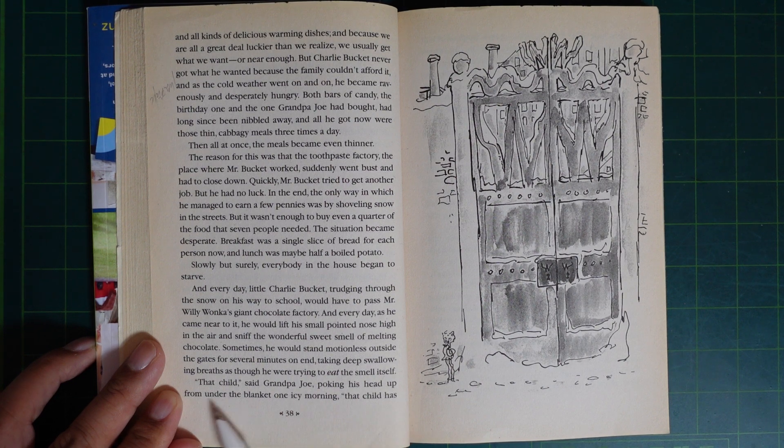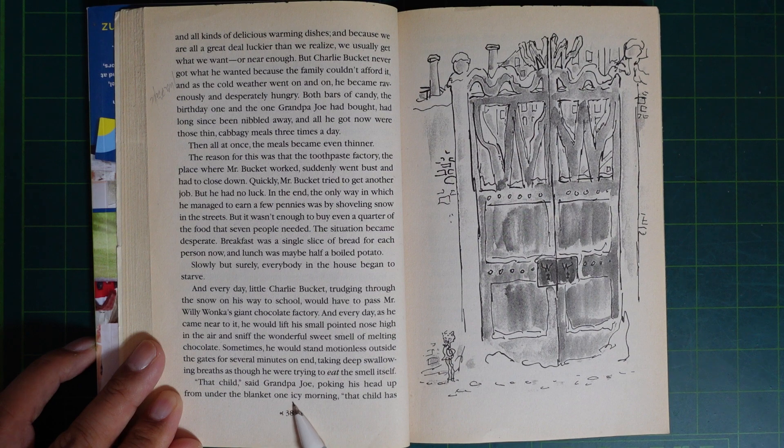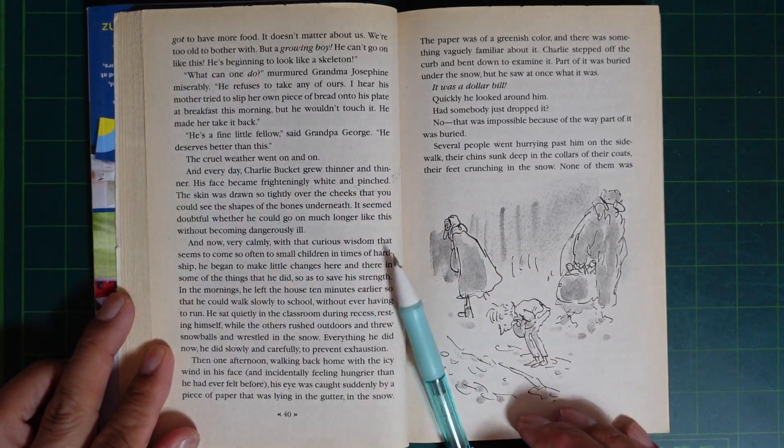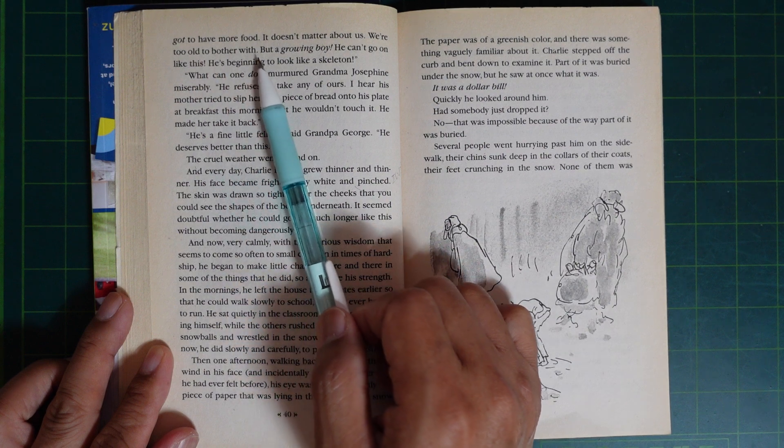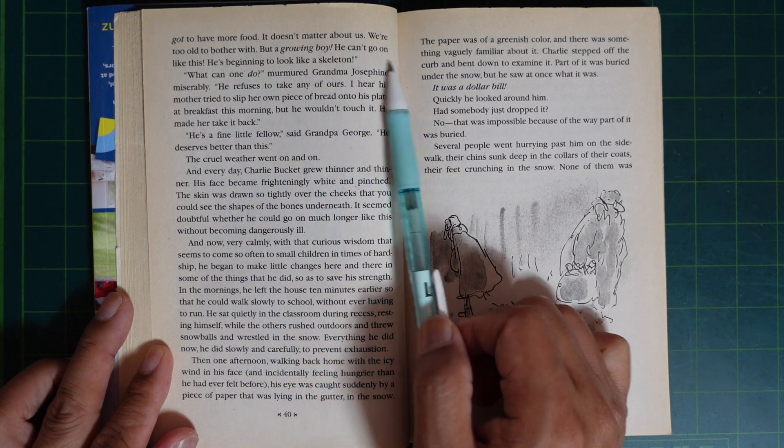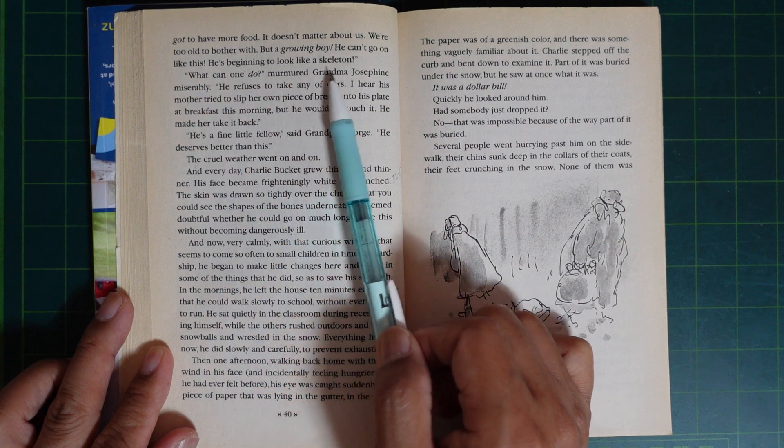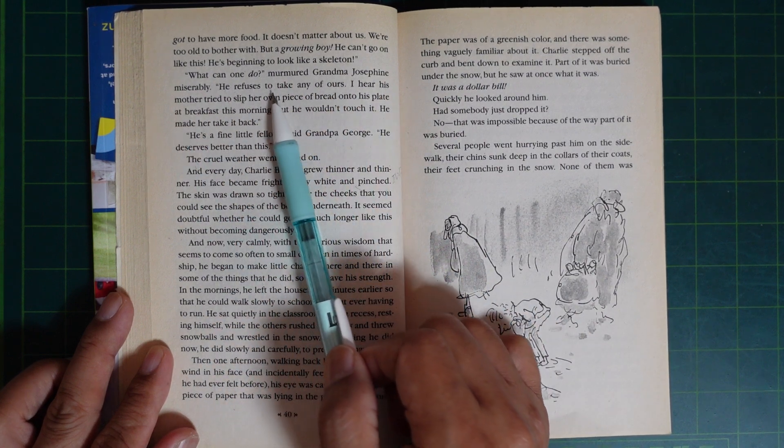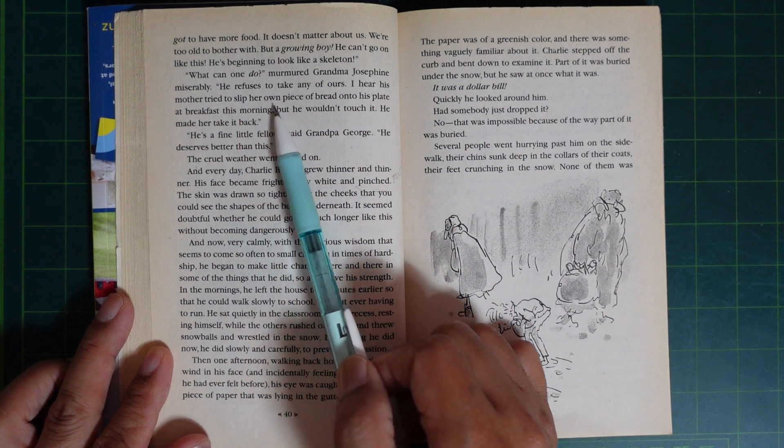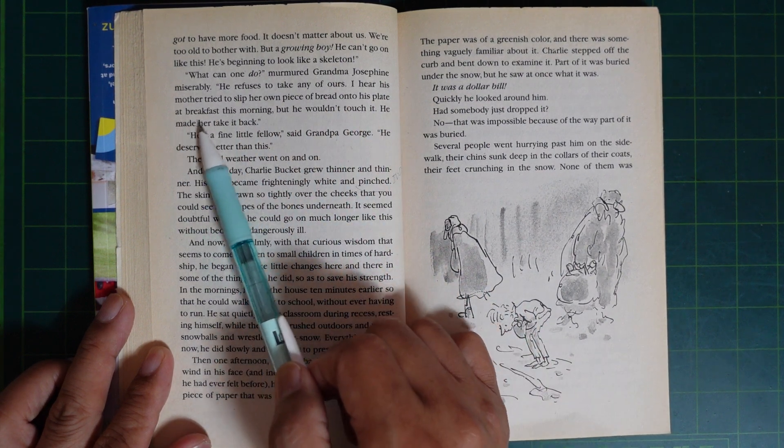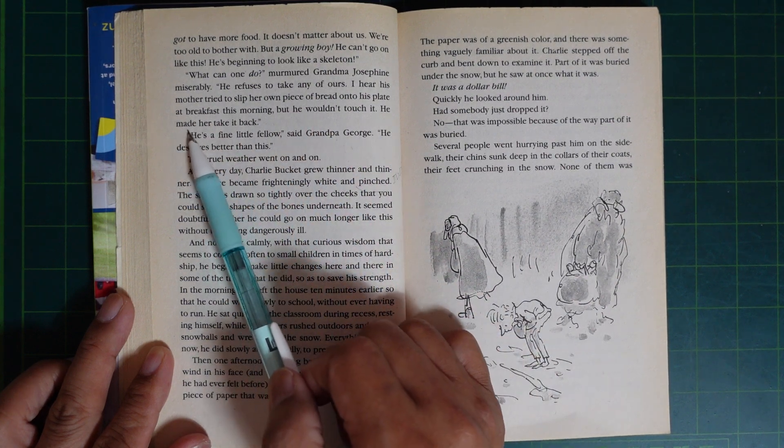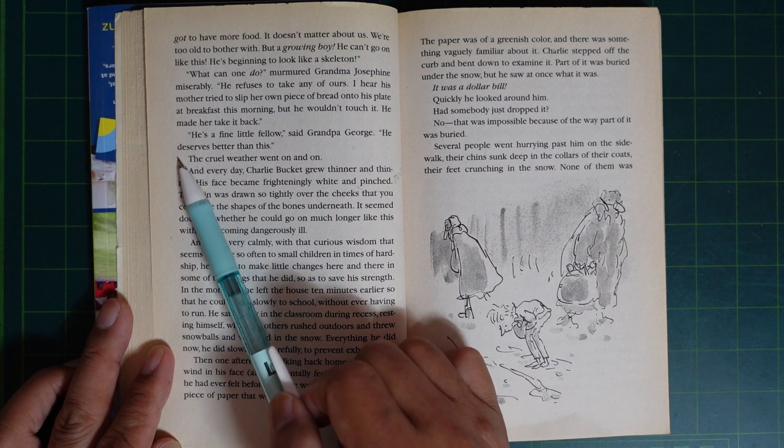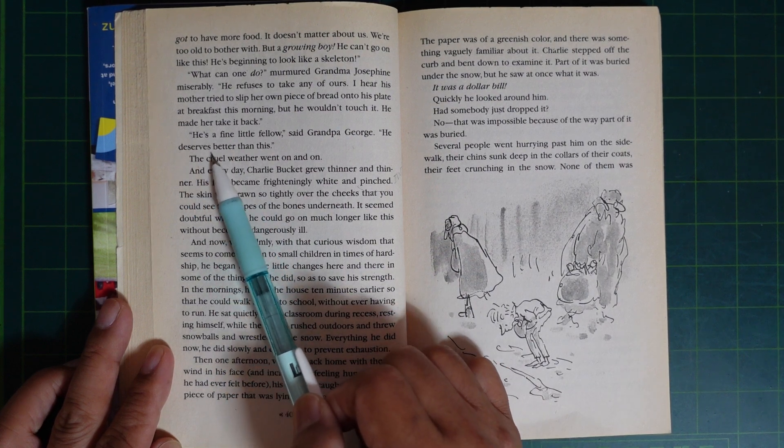That child, said Grandpa Joe, poking his head up from under the blanket one icy morning, that child has got to have more food. It doesn't matter about us. We're too old to bother with. But a growing boy like that, he can't go on like this. He's beginning to look like a skeleton. What can one do? murmured Grandma Josephine miserably. He refuses to take any of ours. I hear his mother tried it. She put her own piece of bread on his plate at breakfast this morning, but he wouldn't touch it. He made her take it back. He's a fine little fellow, said Grandpa George. He deserves better than this.